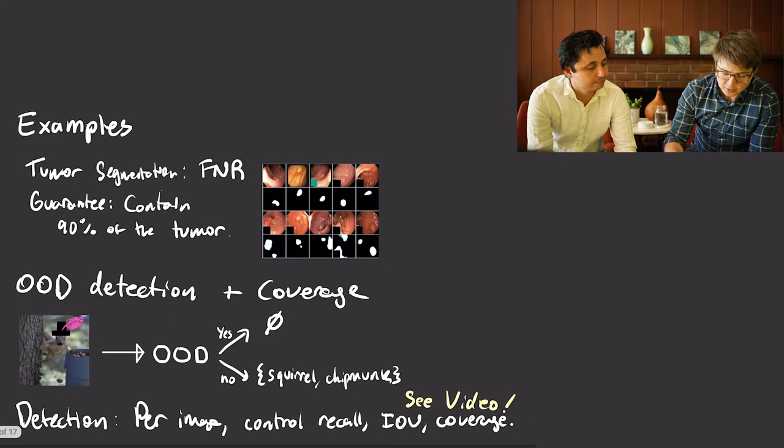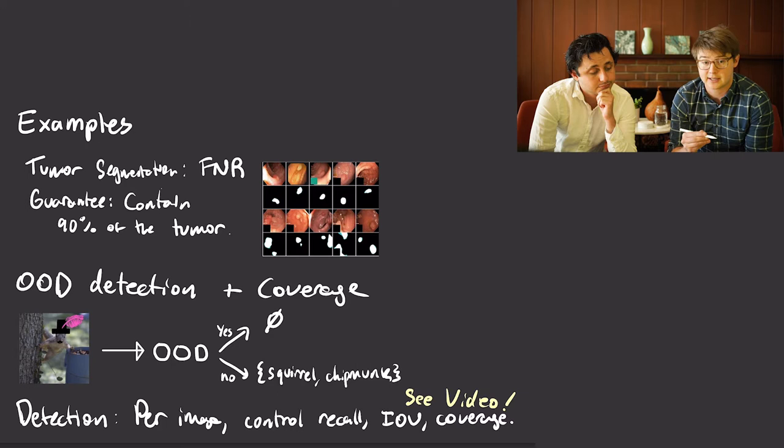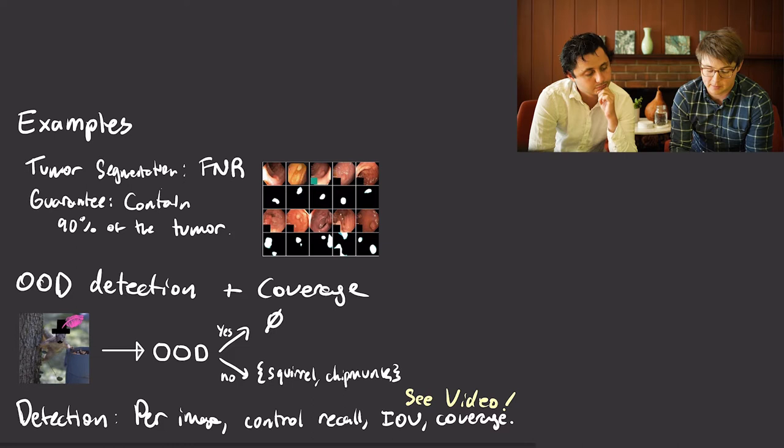Coverage is not always enough, because often you'll have a machine learning problem where you need to look at something more rich, like intersection over union distance, the false discovery rate, or the false positive rate. We're going to tell you how you can control those notions of error so you can deploy your models with confidence. There are a few examples of learning problems where coverage is not going to be enough. Consider a segmentation problem: I have images containing a tumor, and I want my algorithm to find the pixels that correspond to that tumor and outline them.